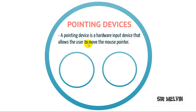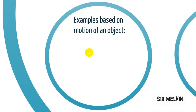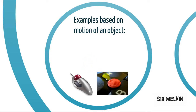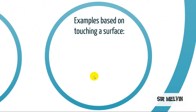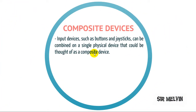Next is the pointing device. A pointing device is a hardware input device that allows the user to move the mouse pointer. Examples include moving objects such as a mouse and trackball. Also based on touch surface are the light pen and touchscreen devices. Composite input devices such as buttons and joysticks can be combined on a single physical device, which could be thought of as a composite device.